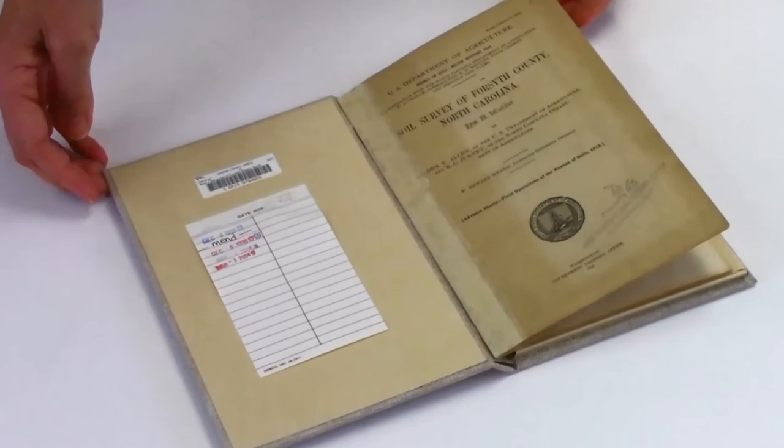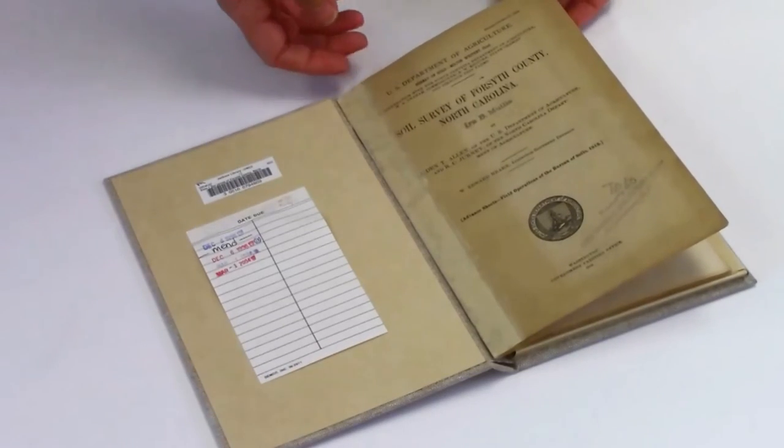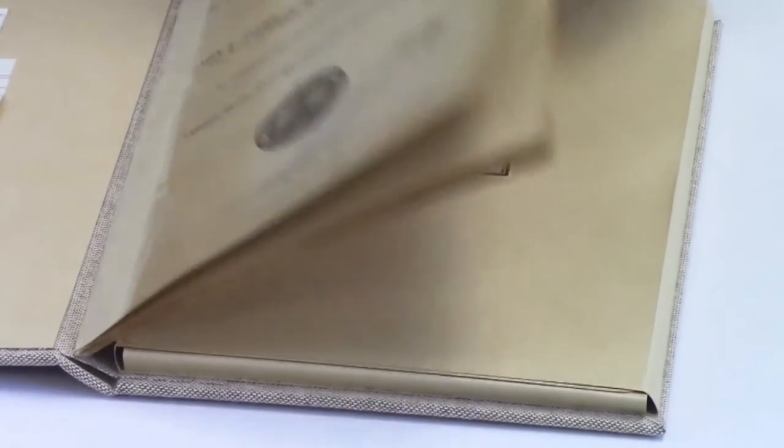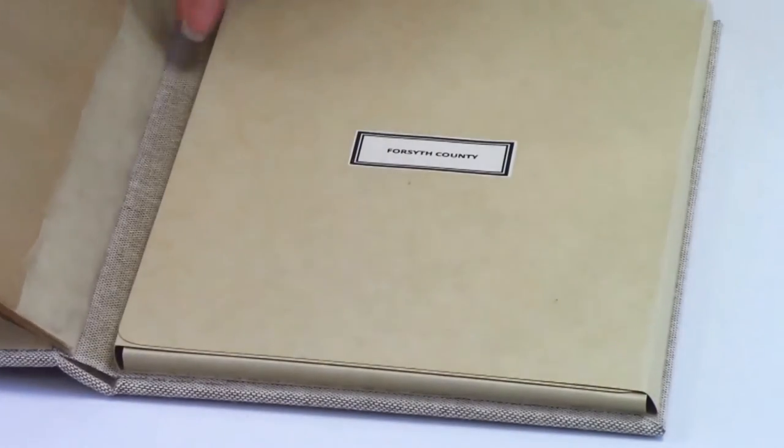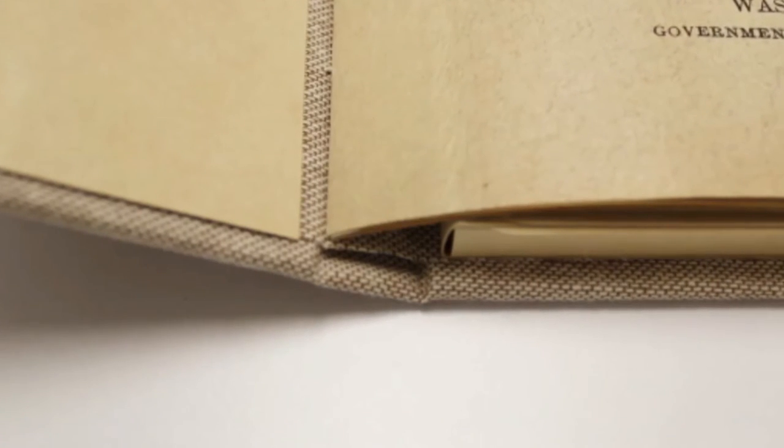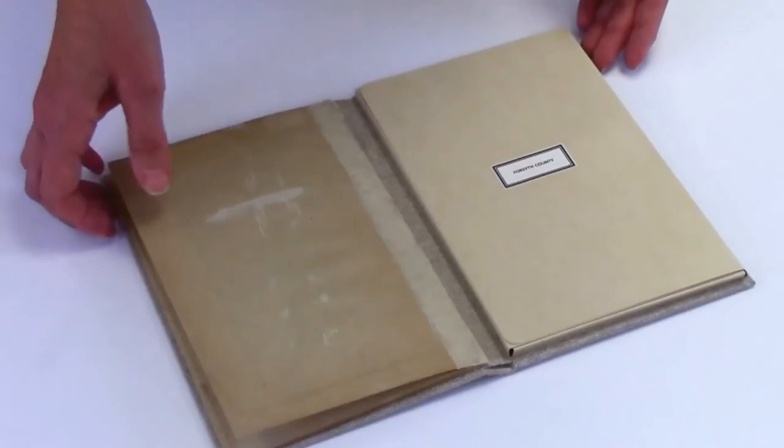The final result was a solid case construction in a book format, covered with a conservation book cloth. The labels were laser printed and a layer of Klucel-G was brushed on to protect and prevent bleeding of the ink.